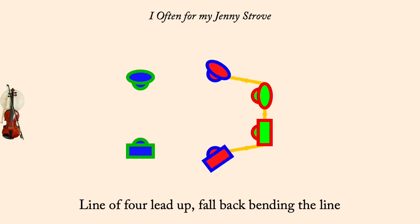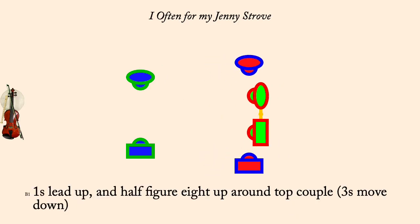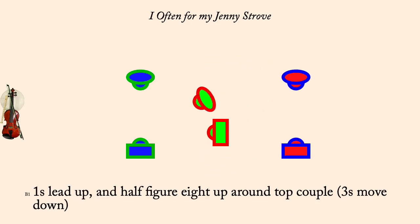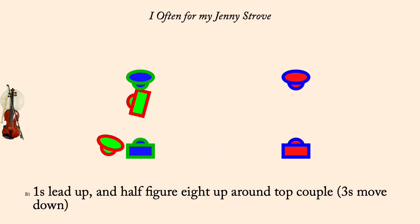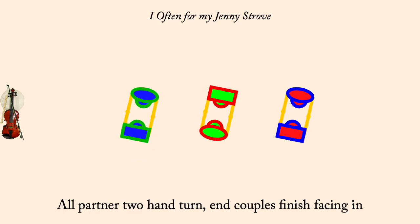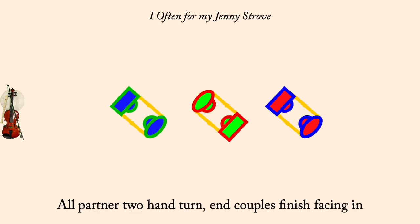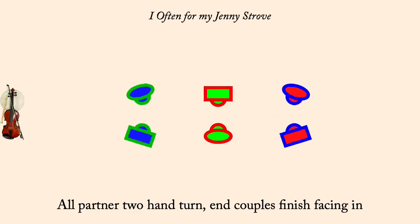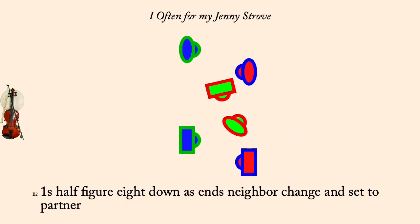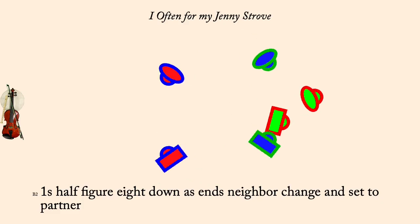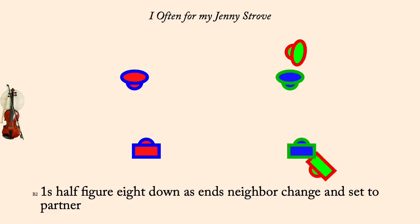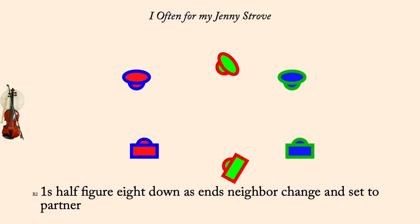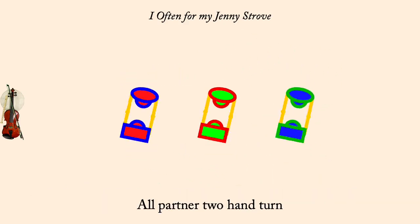Ones lead up and half figure eight through top couple as threes move down. All, partner two-hand turn. Ones half figure eight down as Ann's neighbor change and partner set. All, partner two-hand turn.